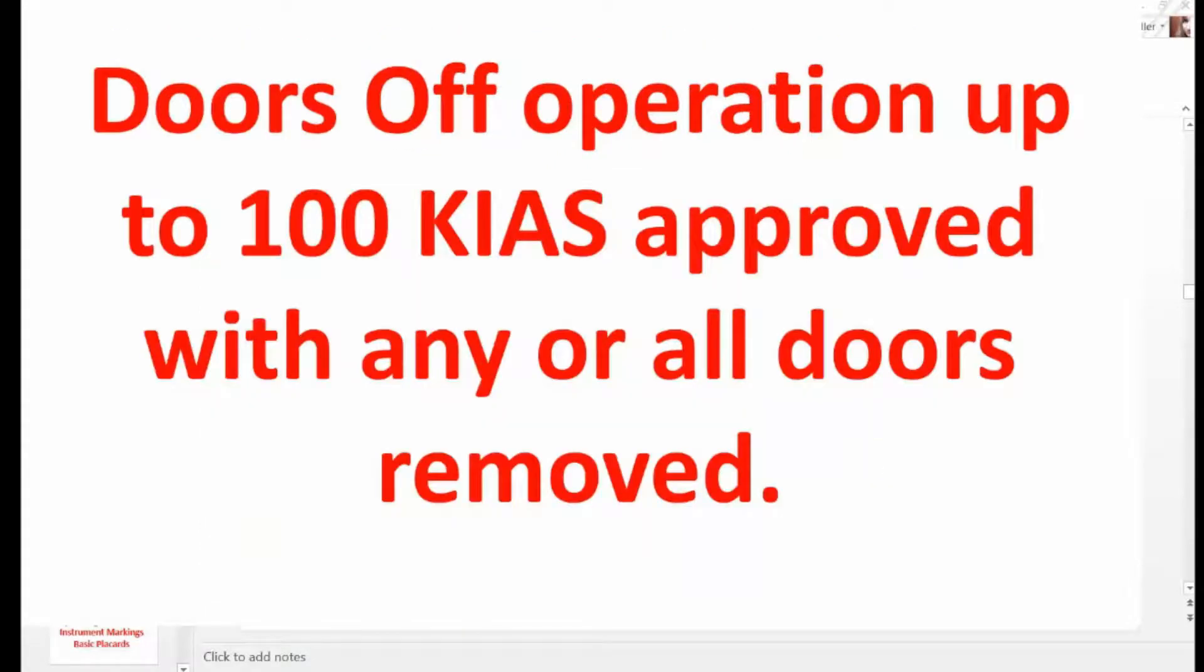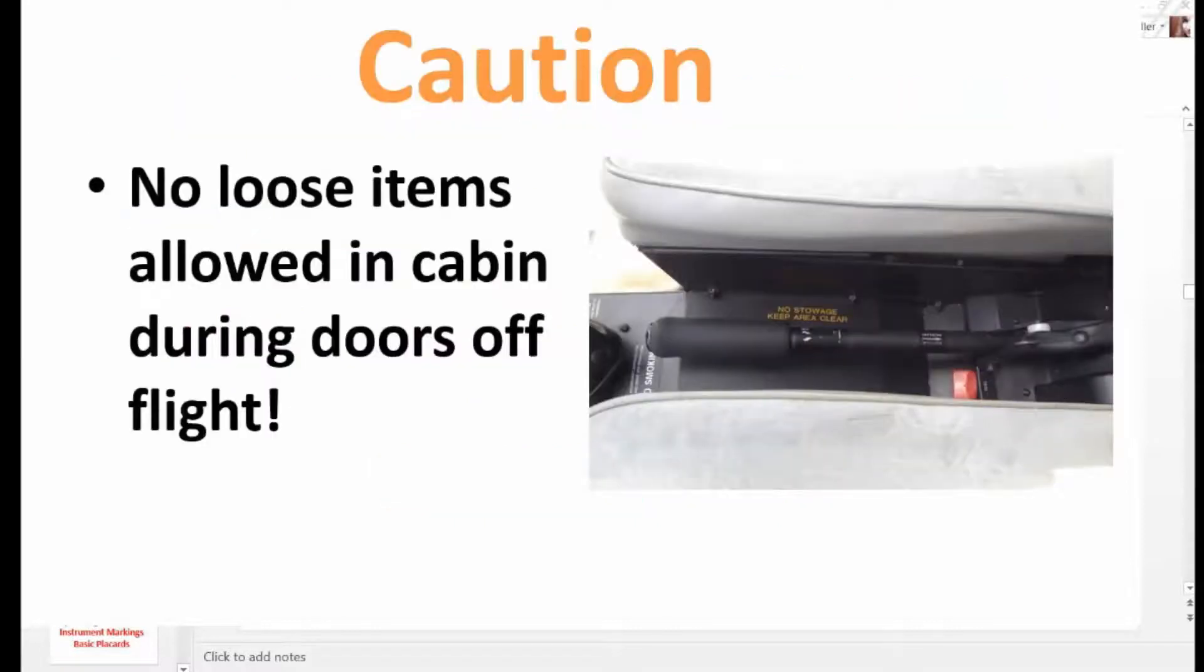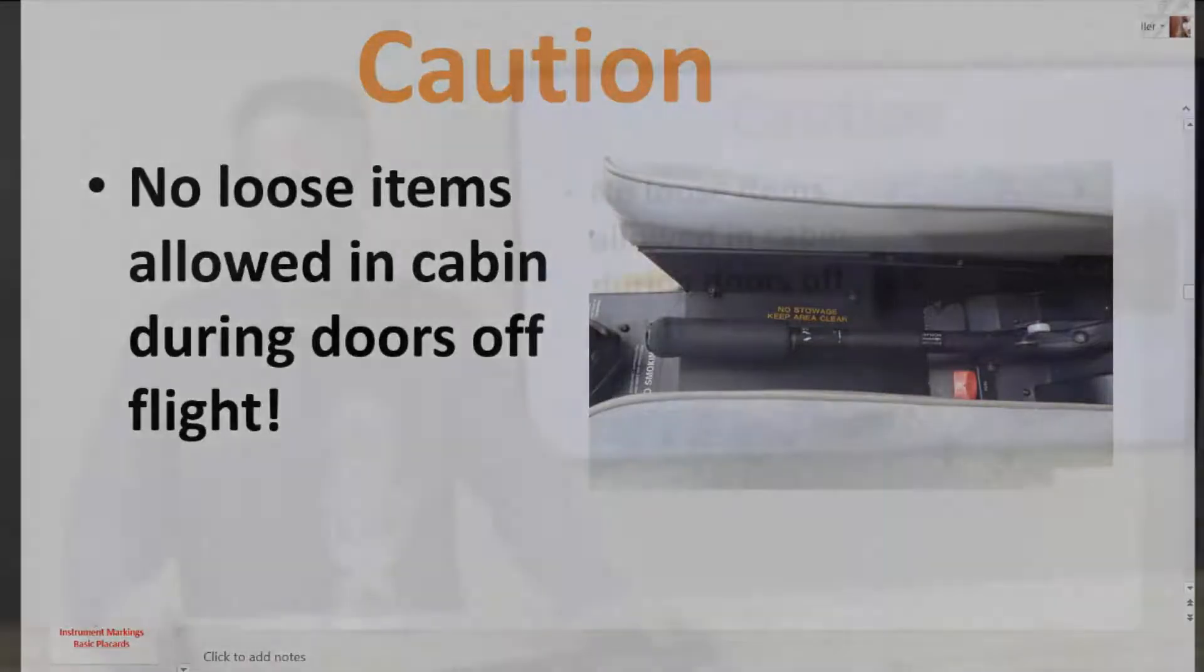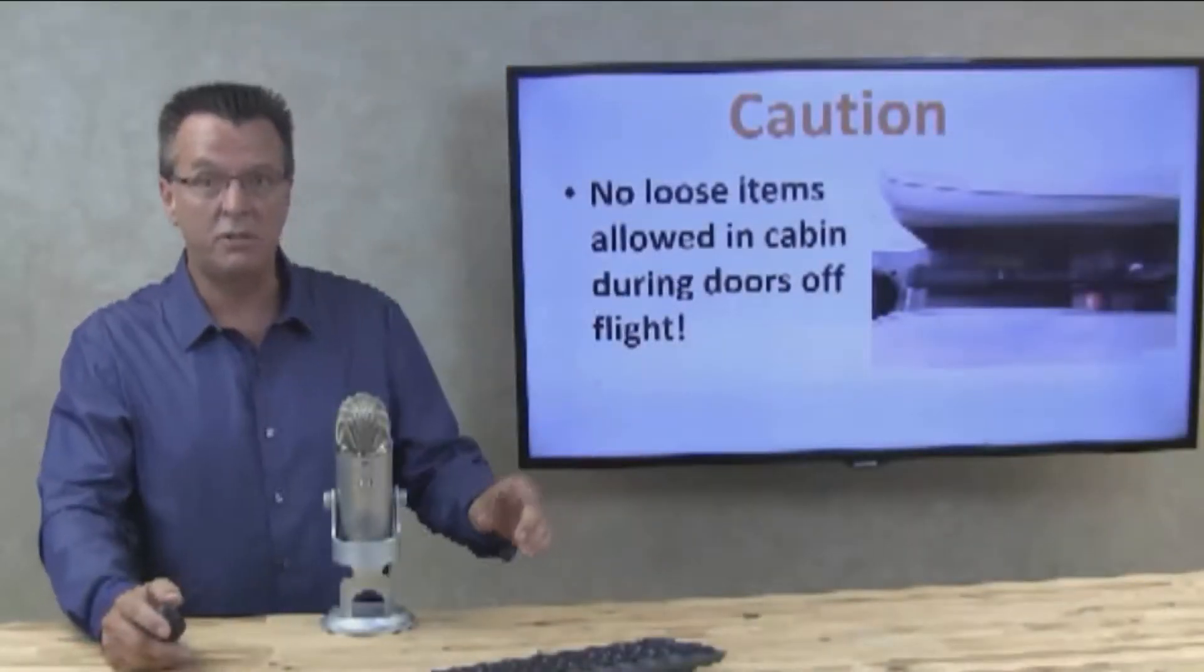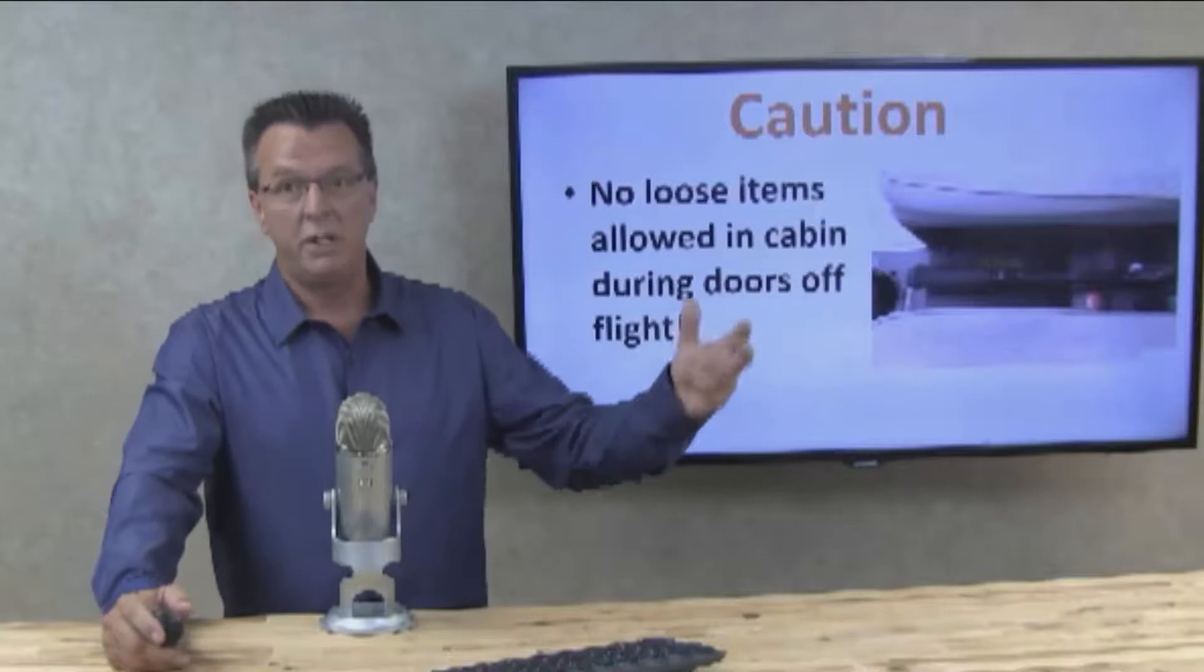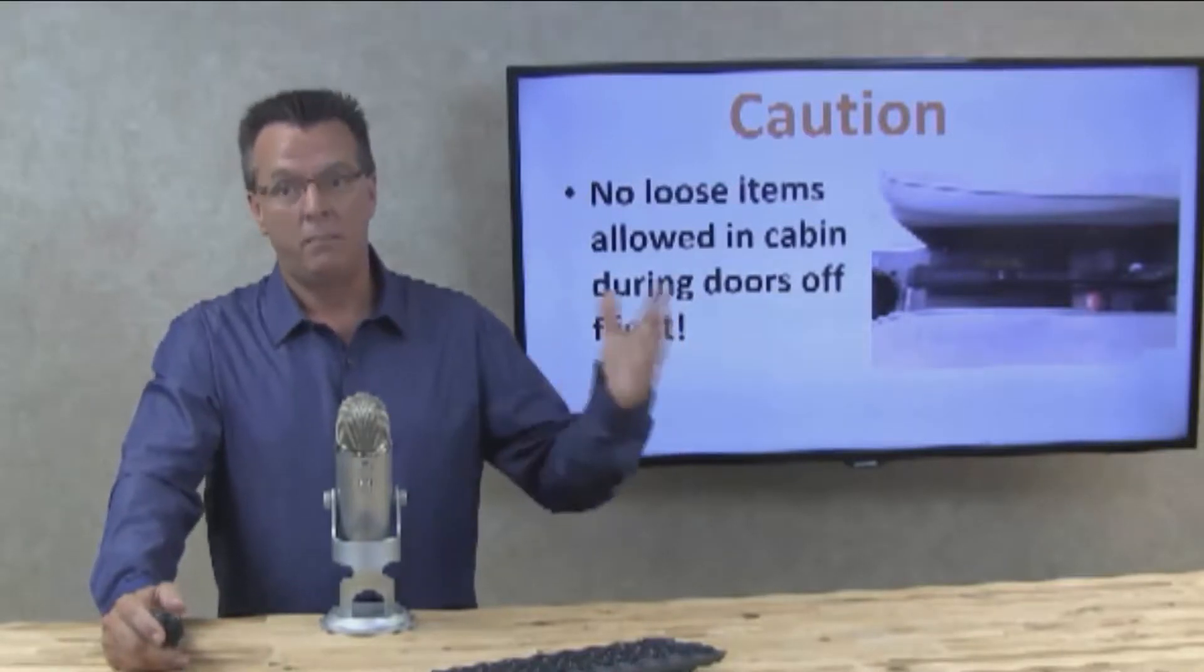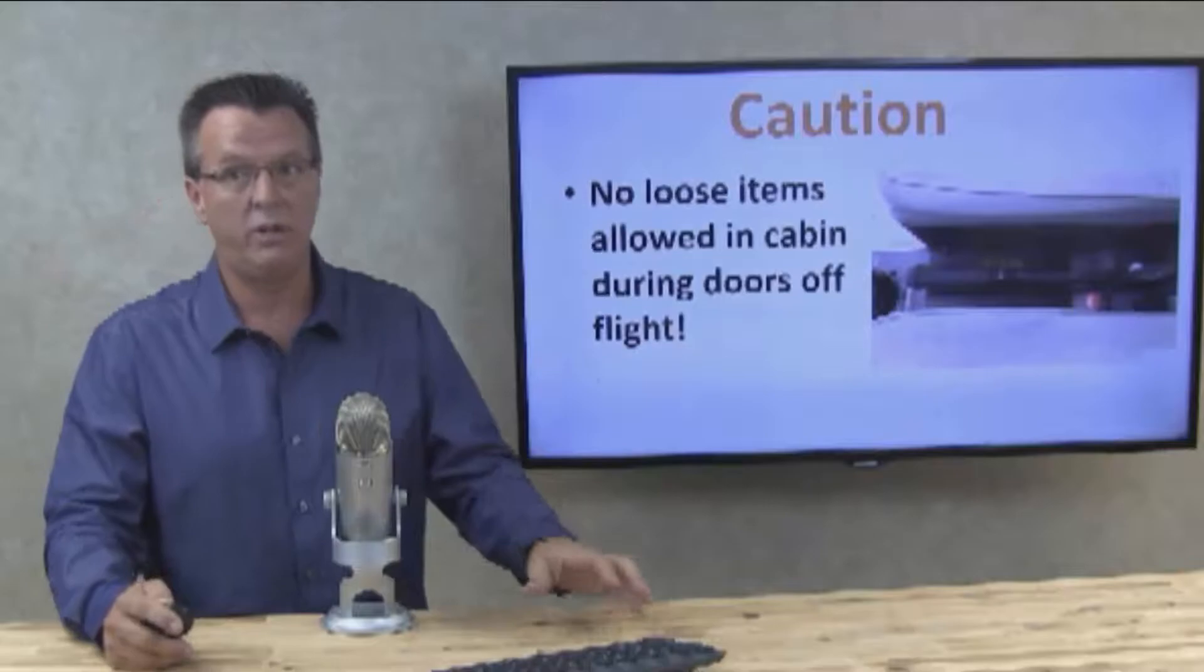Doors off operation up to 100 knots indicated airspeed approved with any or all doors removed. Caution, no loose items allowed in cabin during doors off flight. This is in one of the Robinson safety notices about a door was removed, a knee board went out the window, and a person was in a fatal crash due to something flying out the window.